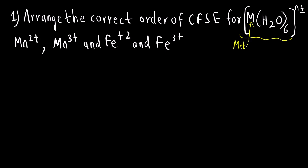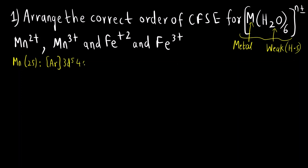M is the central metal ion and water is a weak ligand, so all the complexes will be high spin. Let us first find out for Mn. Mn has atomic number 25, so the electronic configuration is [Ar] 3D5 4S2. For Mn²⁺ we remove two electrons from 4S, giving [Ar] 3D5. There are six ligands, so it is an octahedral complex.